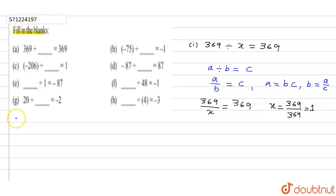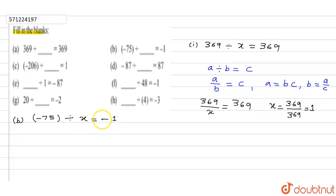Question b: minus 75 divided by x equals minus 1. We need to find x, so x equals minus 75 upon minus 1. The two negatives cancel out, giving x equal to 75.